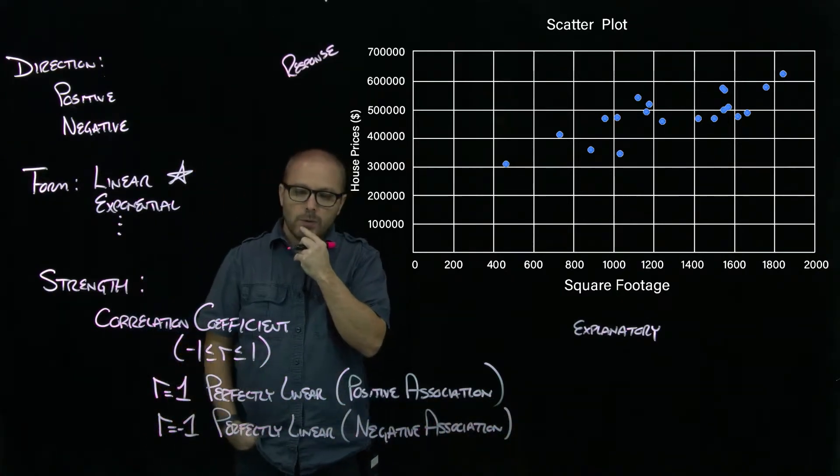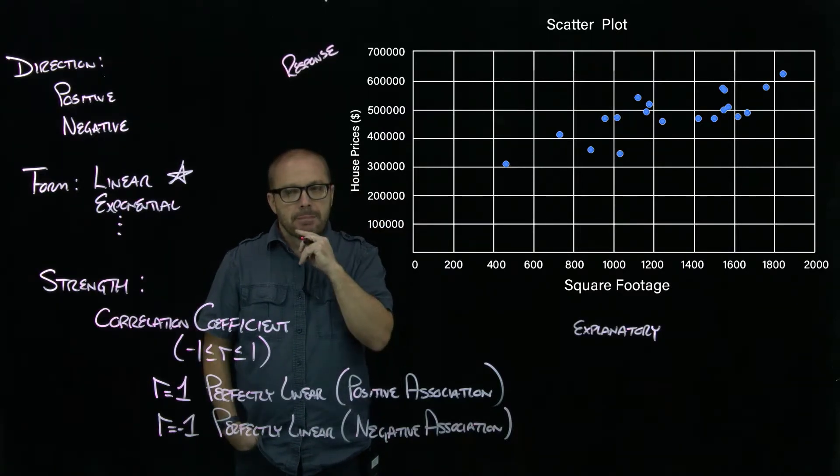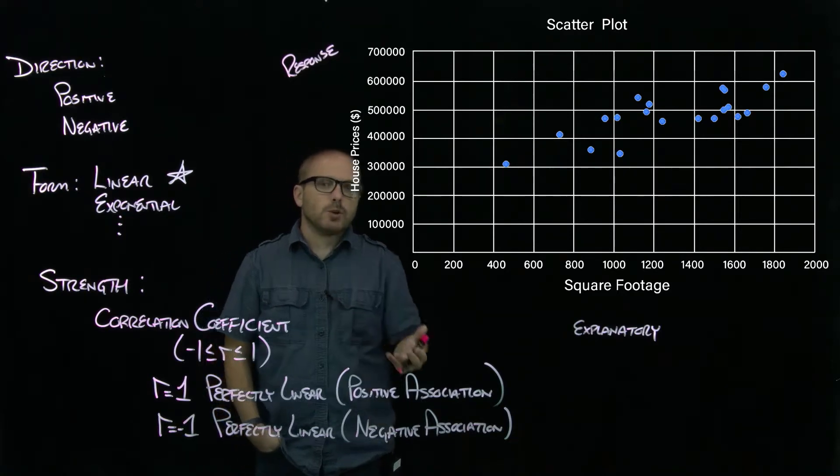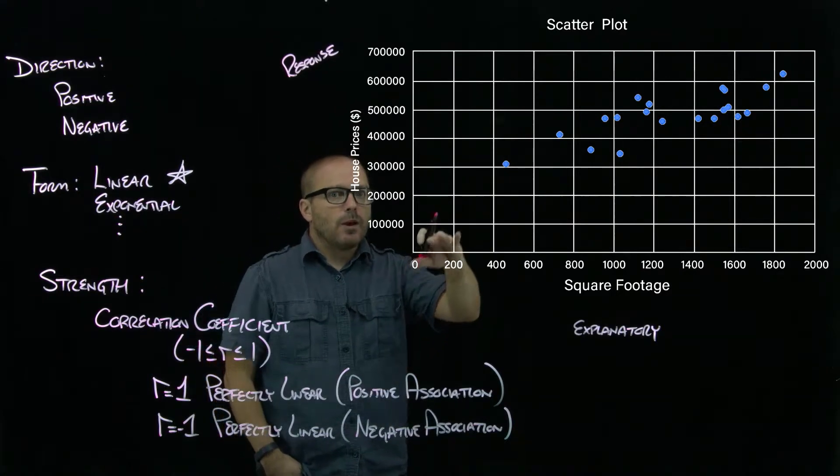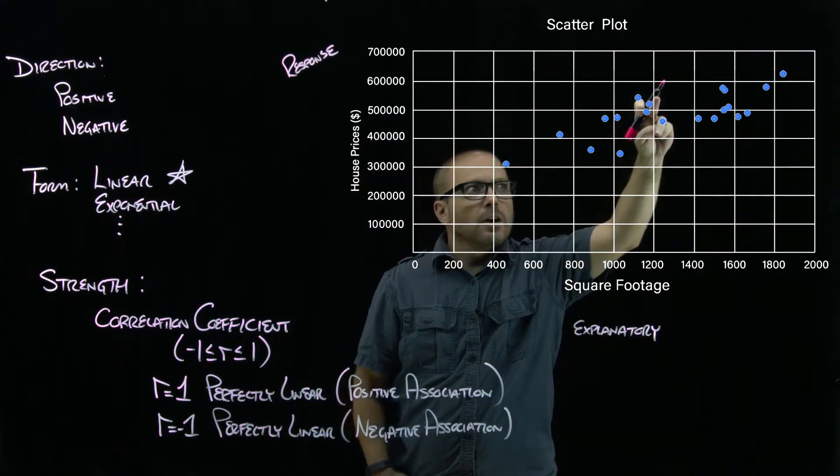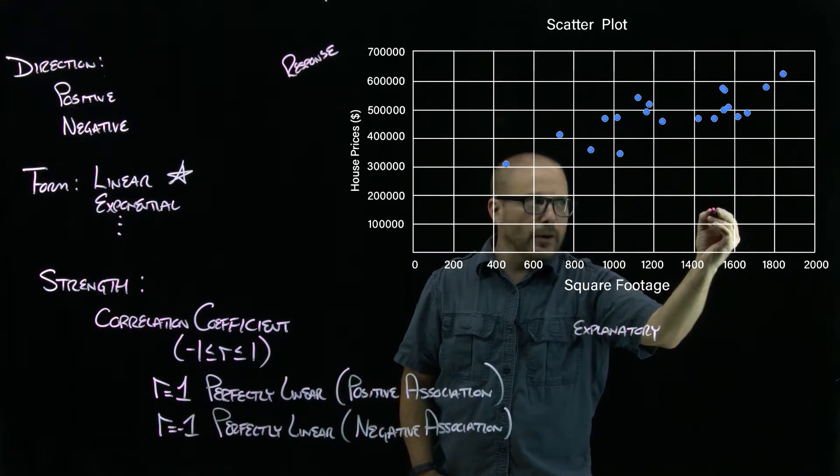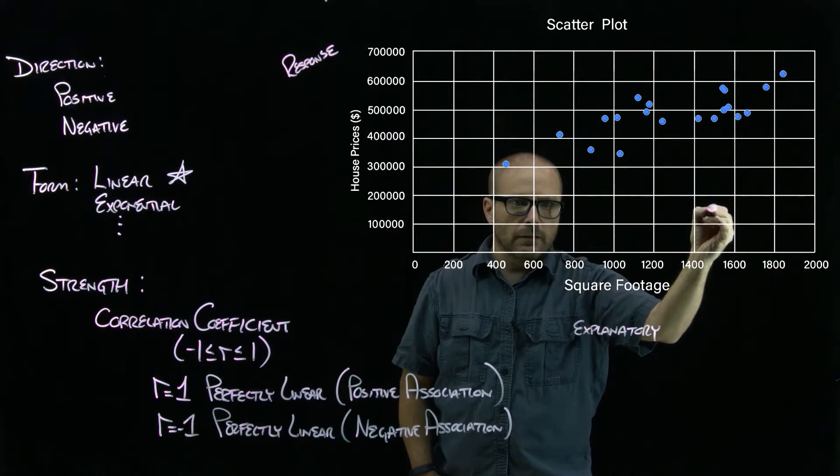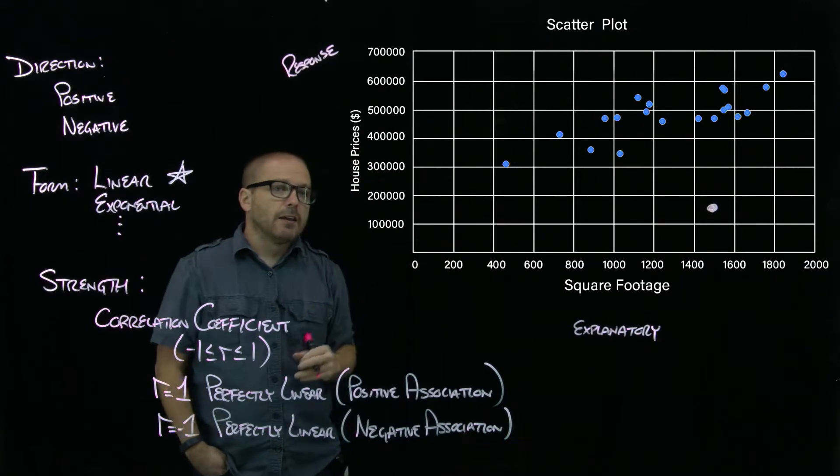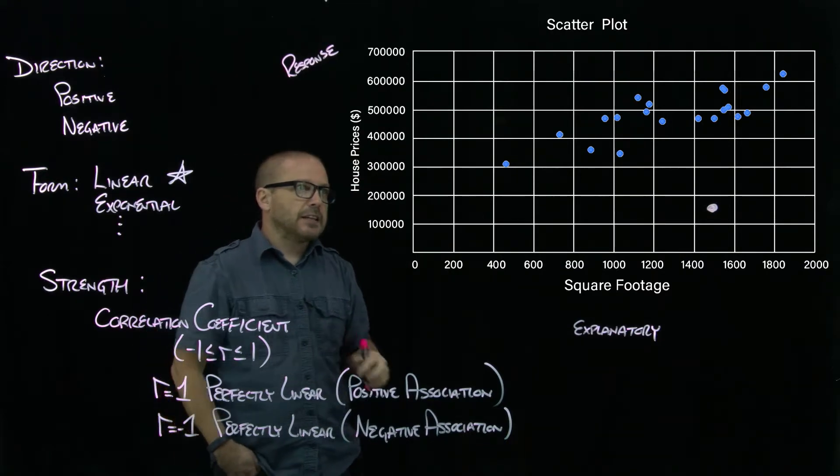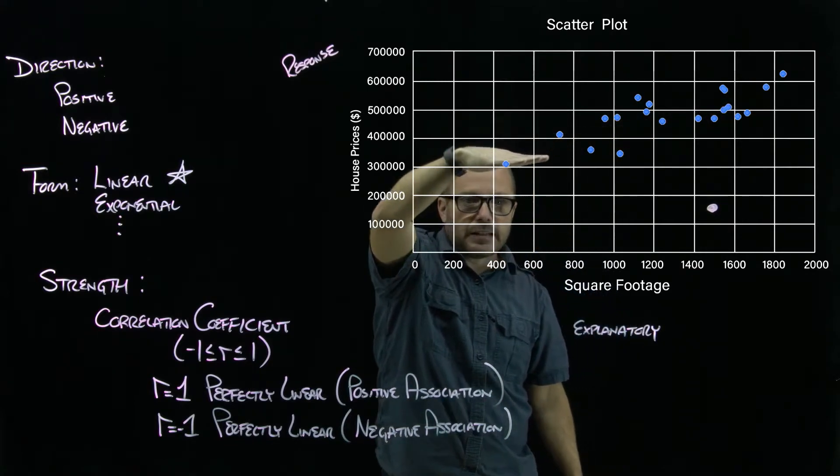Another thing we will look at when we're looking at scatter plots is the idea of influential values or outliers. Since we are trying to fit a line to this data, just one dot that is extremely—say we had a data value right there—that kind of breaks the trend. And as we try and find a line that best fits the data, that line wants to minimize the error in these dots.